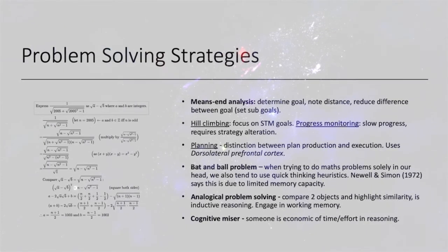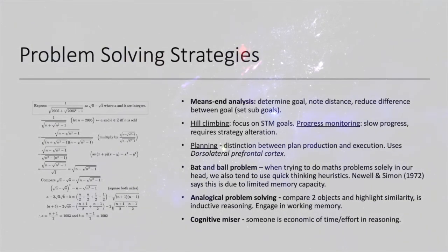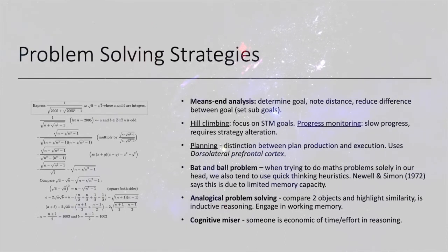The bat and ball problem: when trying to do math problems solely in our heads, we also tend to use quick thinking heuristics. Newell and Simon 1972 said that this is due to our limited memory capacity.